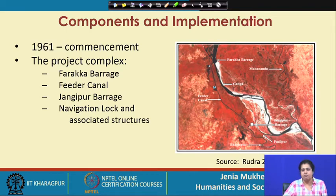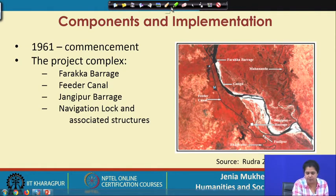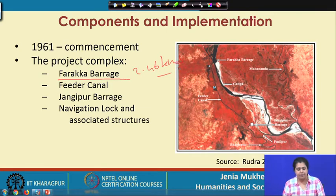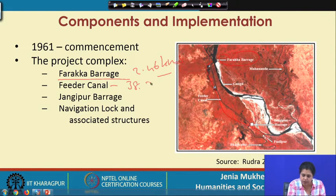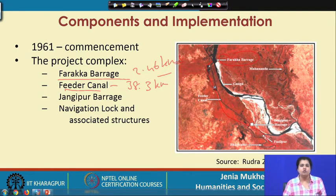The Farakka Barrage Project Authority was formed in 1961 and the project was laid out in 1962. The entire barrage project complex comprises four key elements: the Farakka Barrage which is 2.46 kilometers long, the feeder canal which is 38.3 kilometers long — mainly designed and constructed to carry the induced water from the Ganges to the Bhagirathi — to increase the flow of the Bhagirathi-Hooghly River, and the Jangipur Barrage.